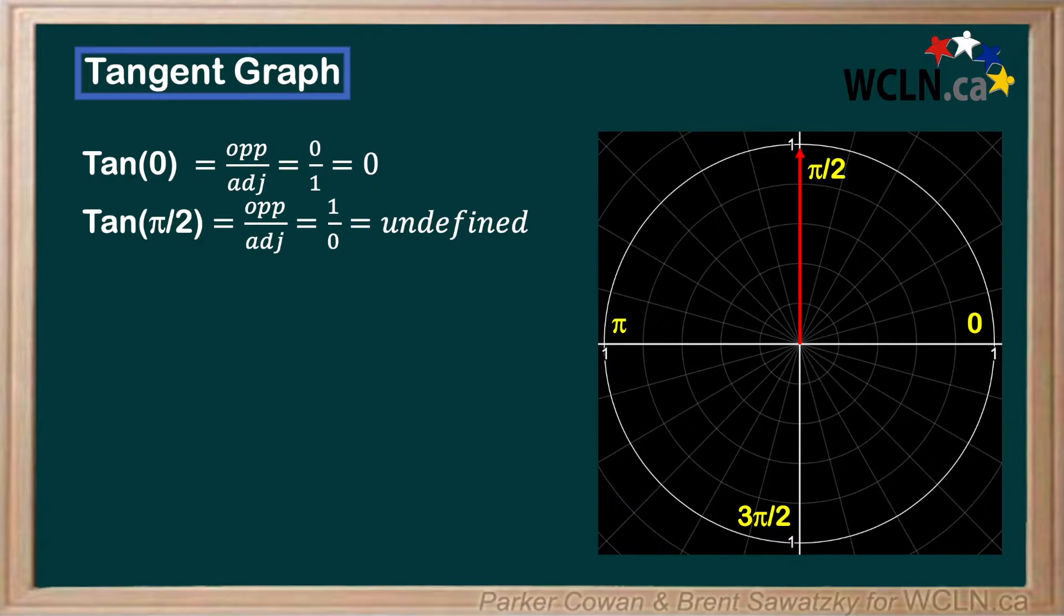For tan of pi, we've seen the same result as for tan of 0. Since the opposite side is squished again, opposite over adjacent gives us 0 over negative 1, which is just 0.